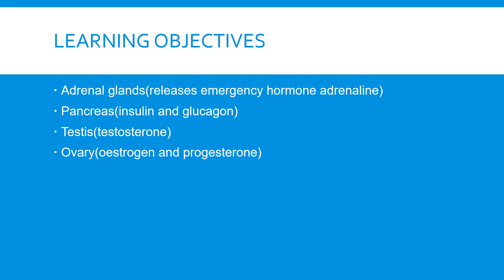So what are the learning objectives for today? First, we are going to learn about the adrenal glands — their function, what hormone they release, and why it is called the emergency hormone. Second, we will study the pancreas, what hormones it releases, and where it is located. And last, we cover the testes and ovaries — the hormones they release and their exact locations.